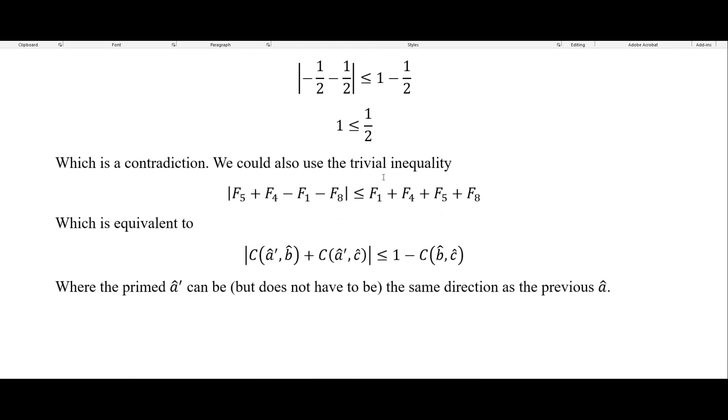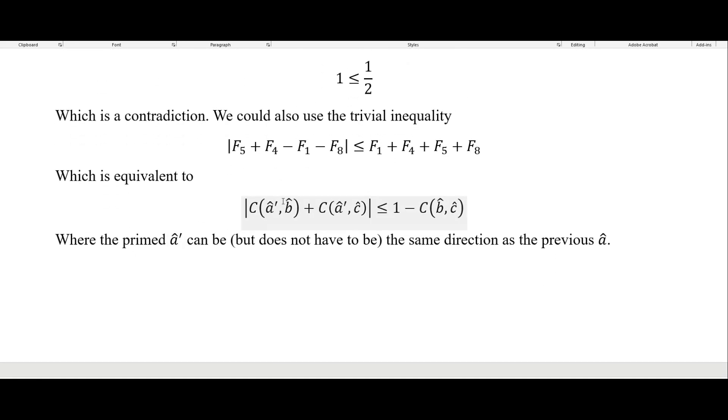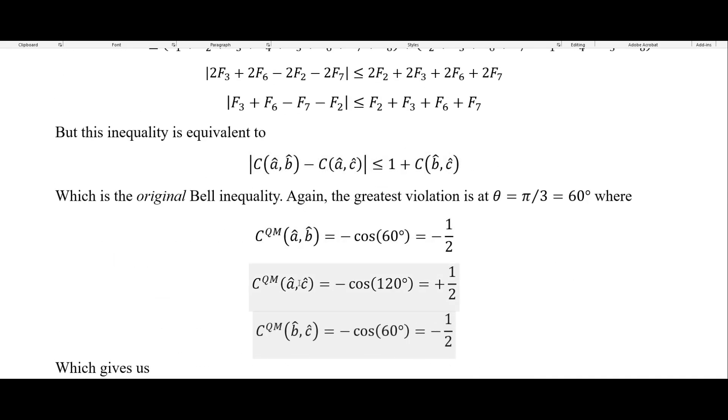We could also do the trivial inequality here. And this is just equivalent to this. So now we have this plus this on this left side of the inequality. And then one minus this on the right side, where up here is this minus this on the left side. And then one plus this on the right side where this primed A here. So now we're looking at a primed A on each of these can be, but does not have to be in the same direction as our previous A up here.